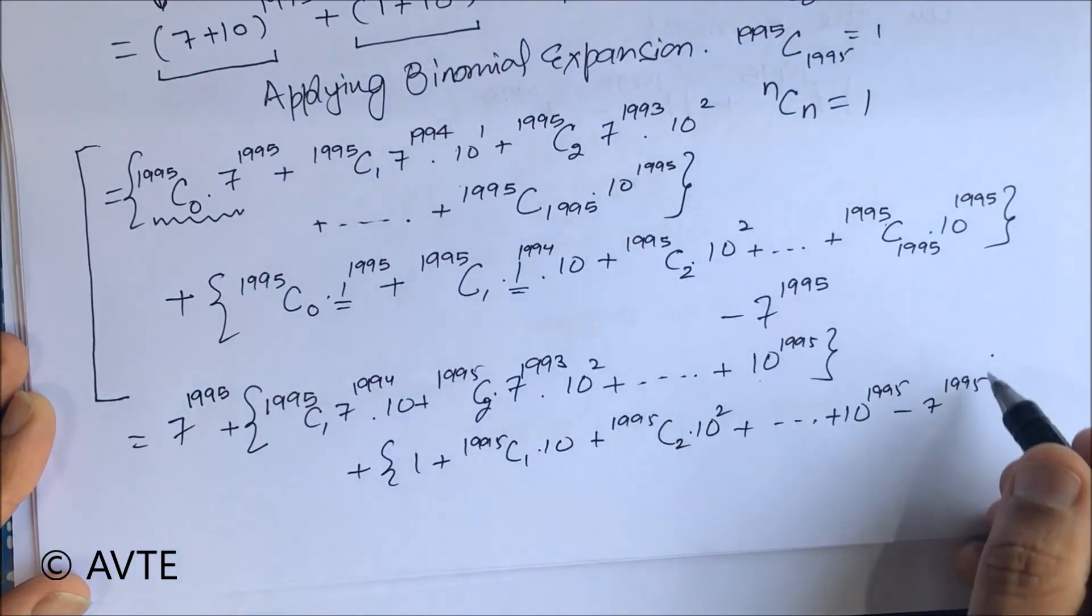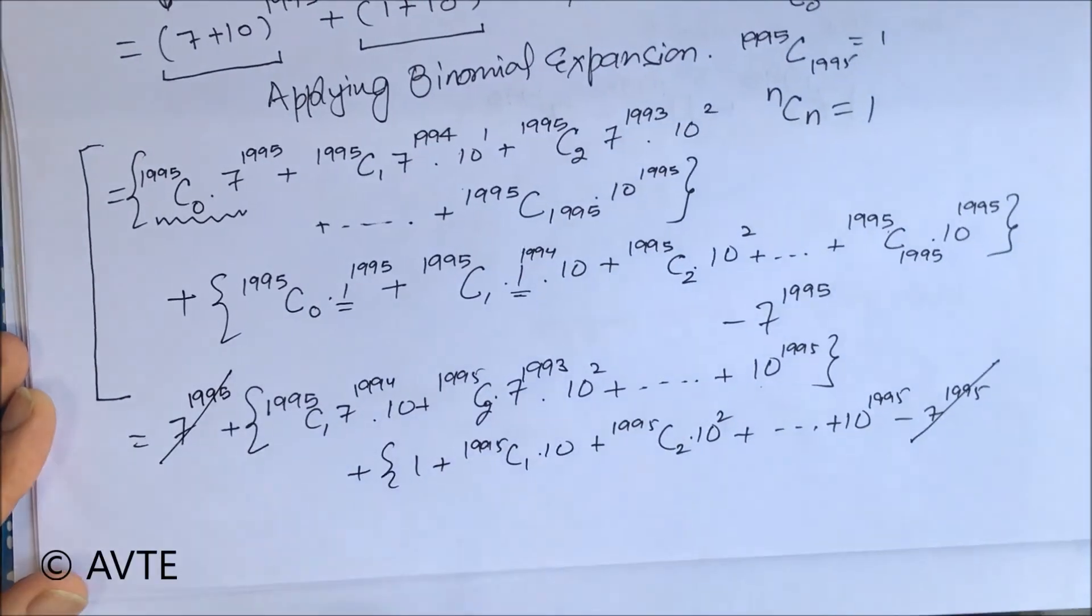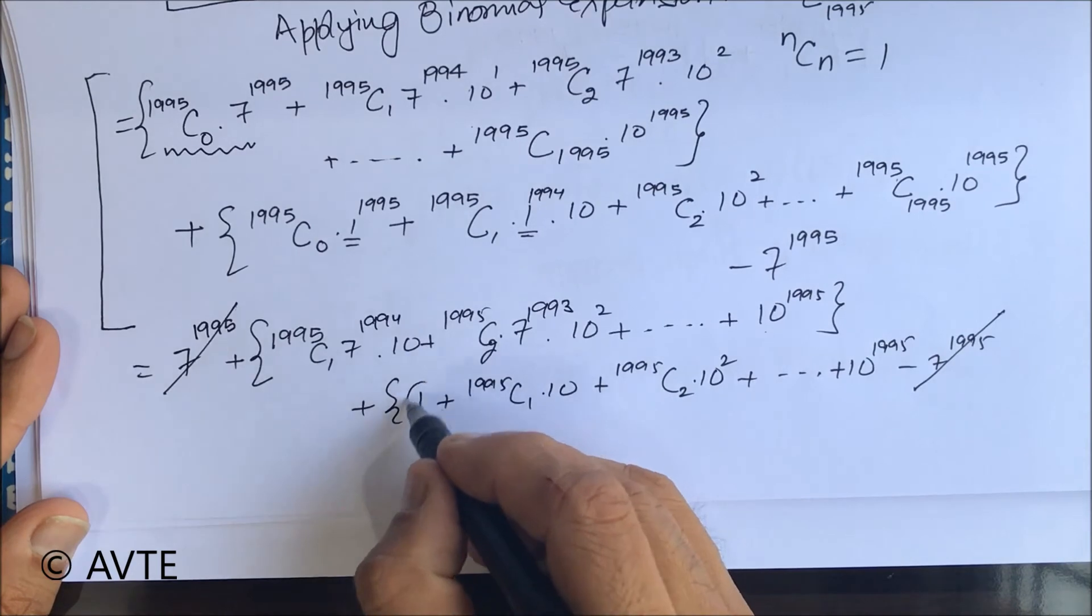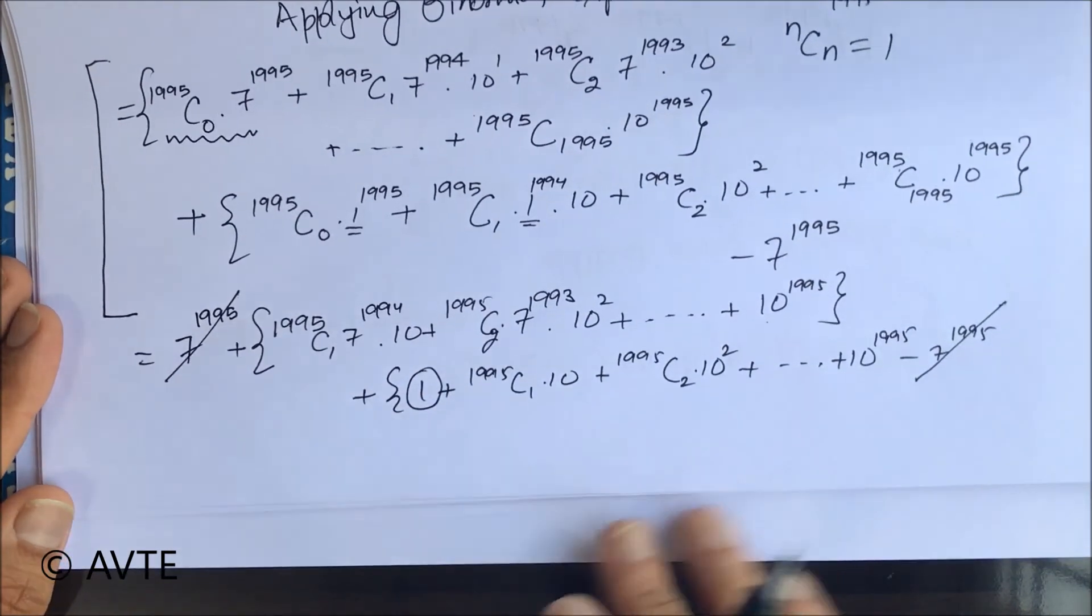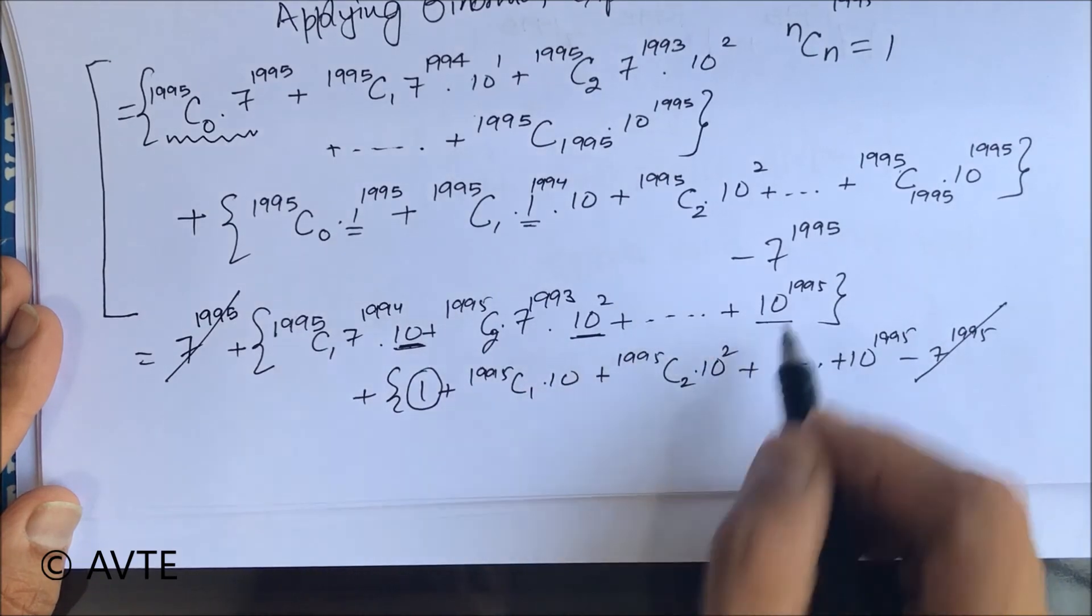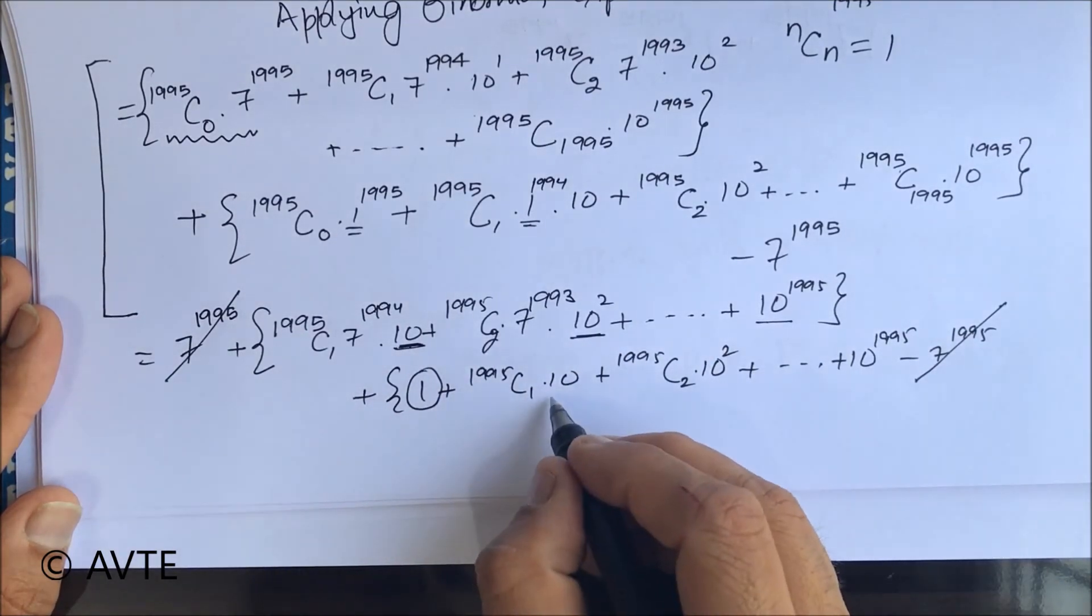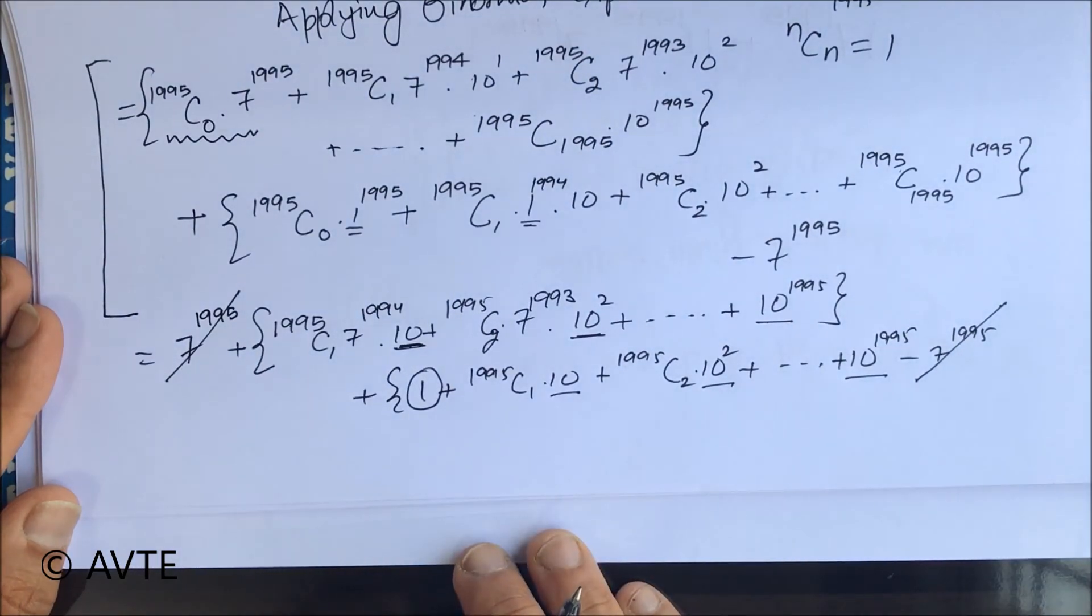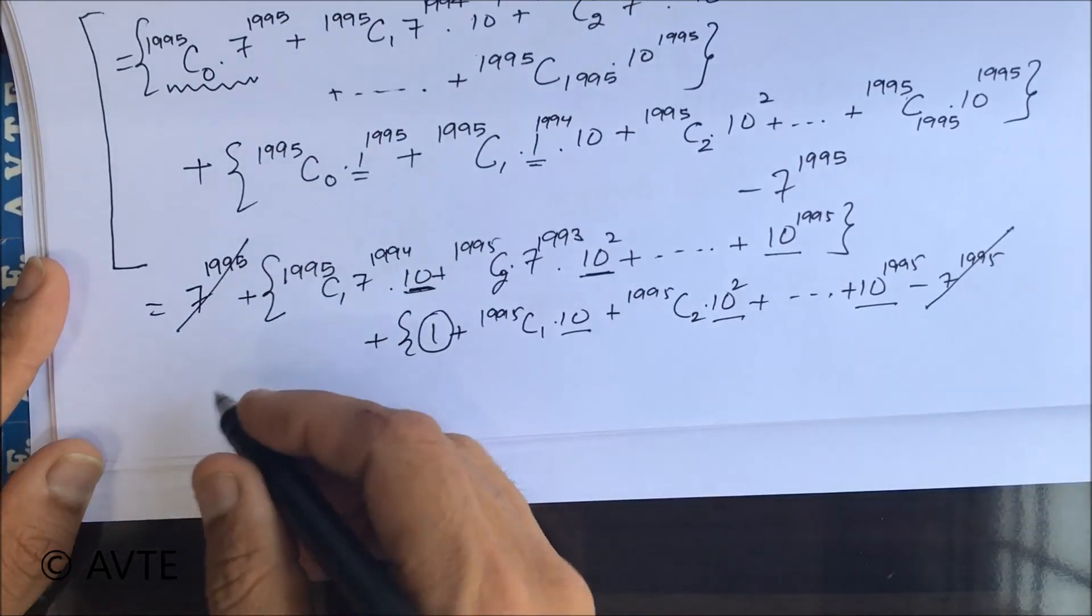So this is now gone with this and all the terms are multiple of 10 except for this. All the terms are multiple of 10. You can see 10, 10 square, 10 raised to power 1995. Similarly in this also 10, 10 square, 10 raised to power 1995. So all are the multiples of 10.